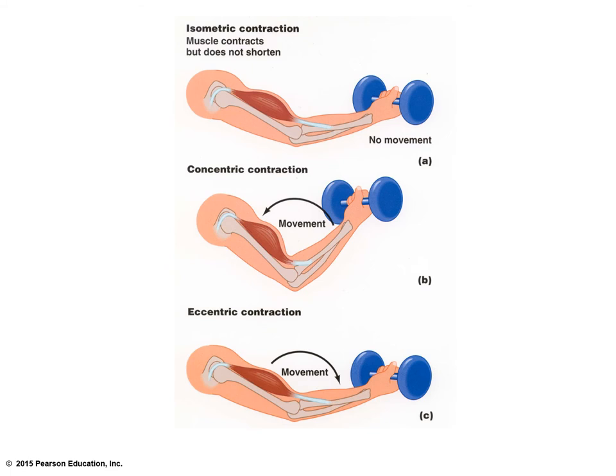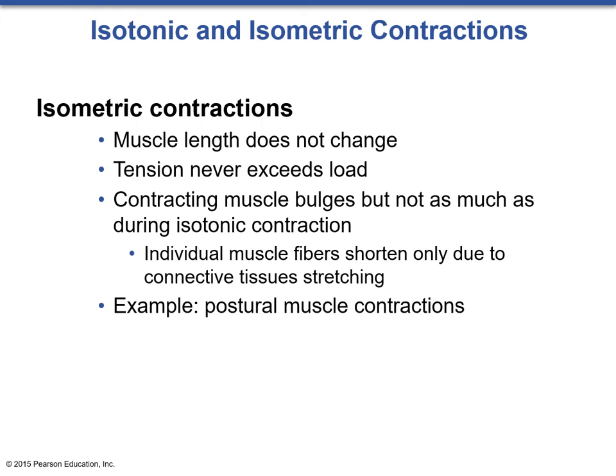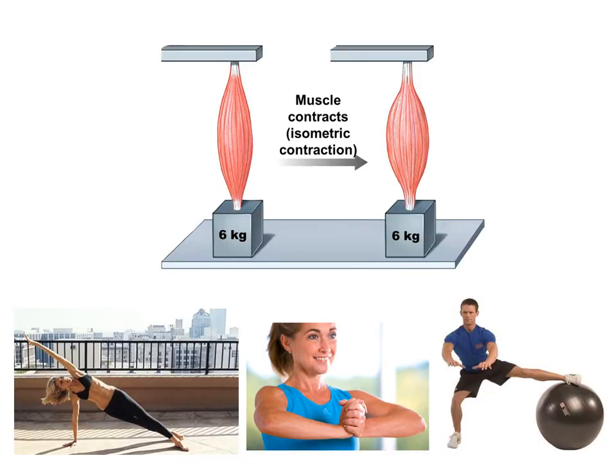The last type of contraction is isometric. The muscle contracts but does not shorten and there is no movement. In isometric contractions, the muscle length does not change, the tension never exceeds the load, and the contracting muscle bulges but not as much as during an isotonic contraction. Individual muscle fibers shorten only due to connective tissue stretching. An example is postural muscles contracting, doing a plank, or holding a weight in place. The muscle is visibly bulging but not moving, not able to lift the weight, just supporting it.